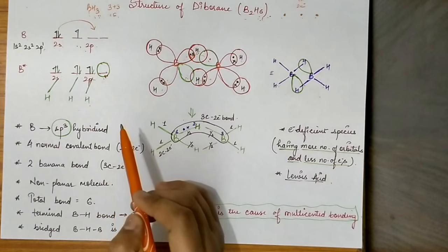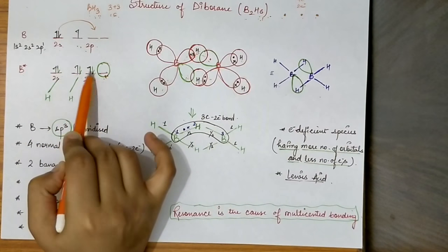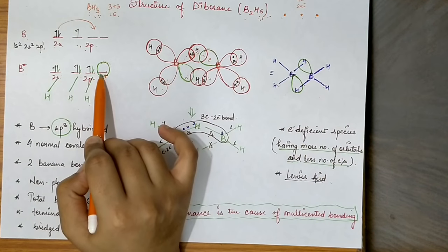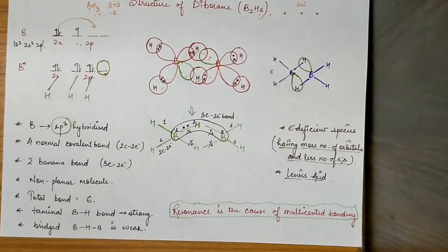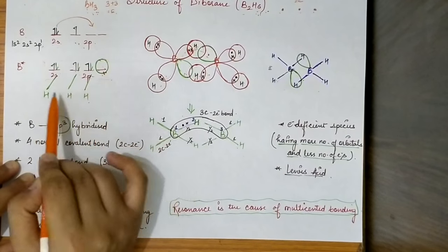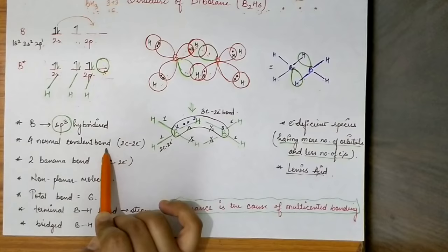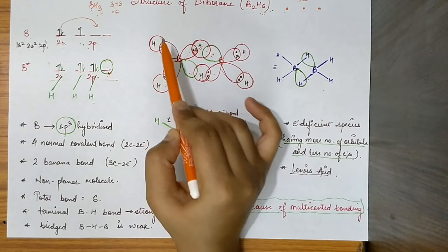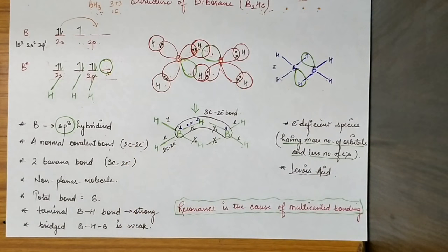Now let's talk about hybridization. For BH3, boron is sp2 hybridized. But in B2H6, because the unhybridized orbital is also involved in delocalization, the hybridization becomes sp3. All orbitals participate in bonding. In normal covalent bonds we have 2 centers and 2 electrons, but when the ratio changes we get multi-centered bonds.